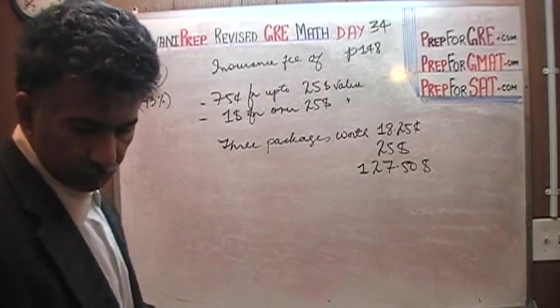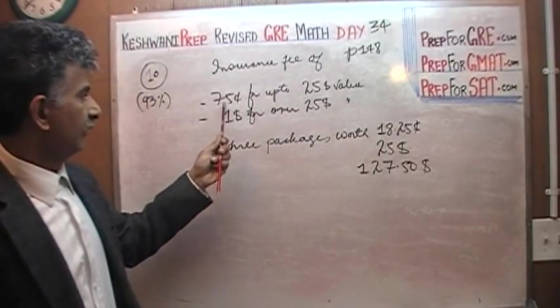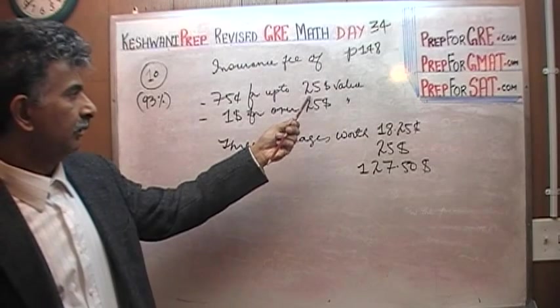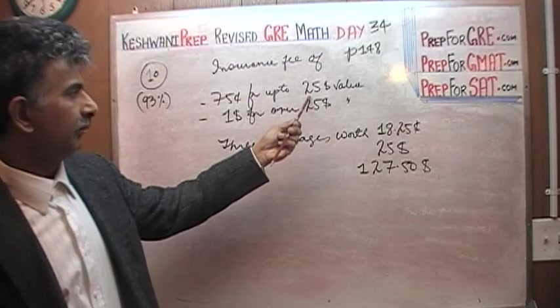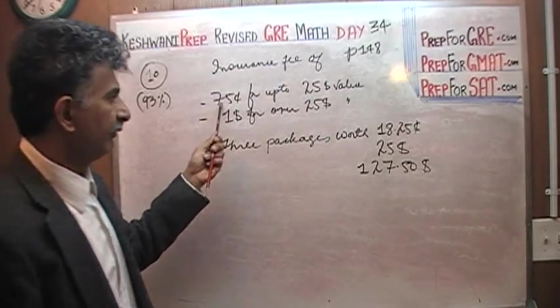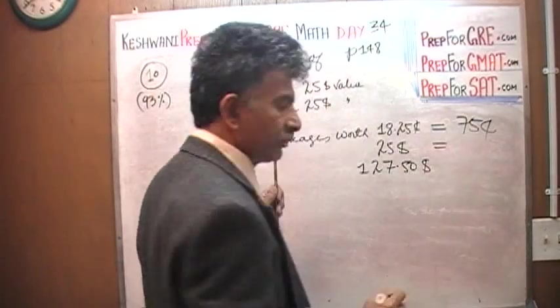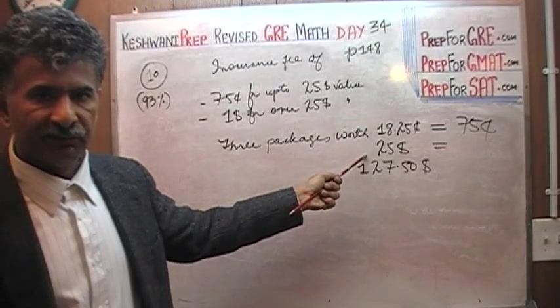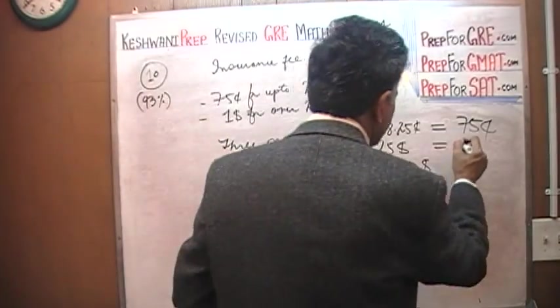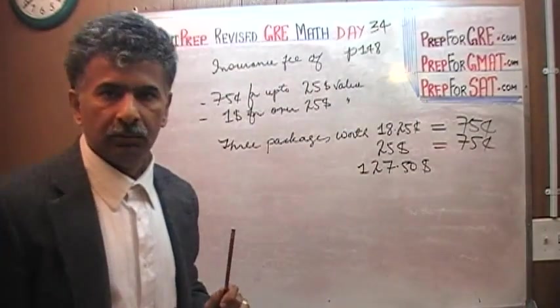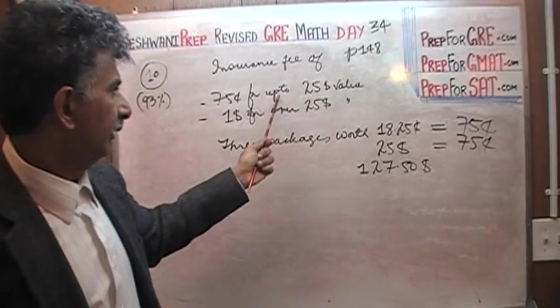Well it is very simple. This package here, that is $18.25, we are told that any package that is worth under $25 or up to $25, including $25, that's the tricky part, that's where people make mistakes, up to $25 is only 75 cents. So this is going to cost us 75 cents to insure. The second package, which is worth exactly $25, will also cost us 75 cents to insure because the insurance rates are such that any package up to $25, including $25, costs 75 cents to insure.